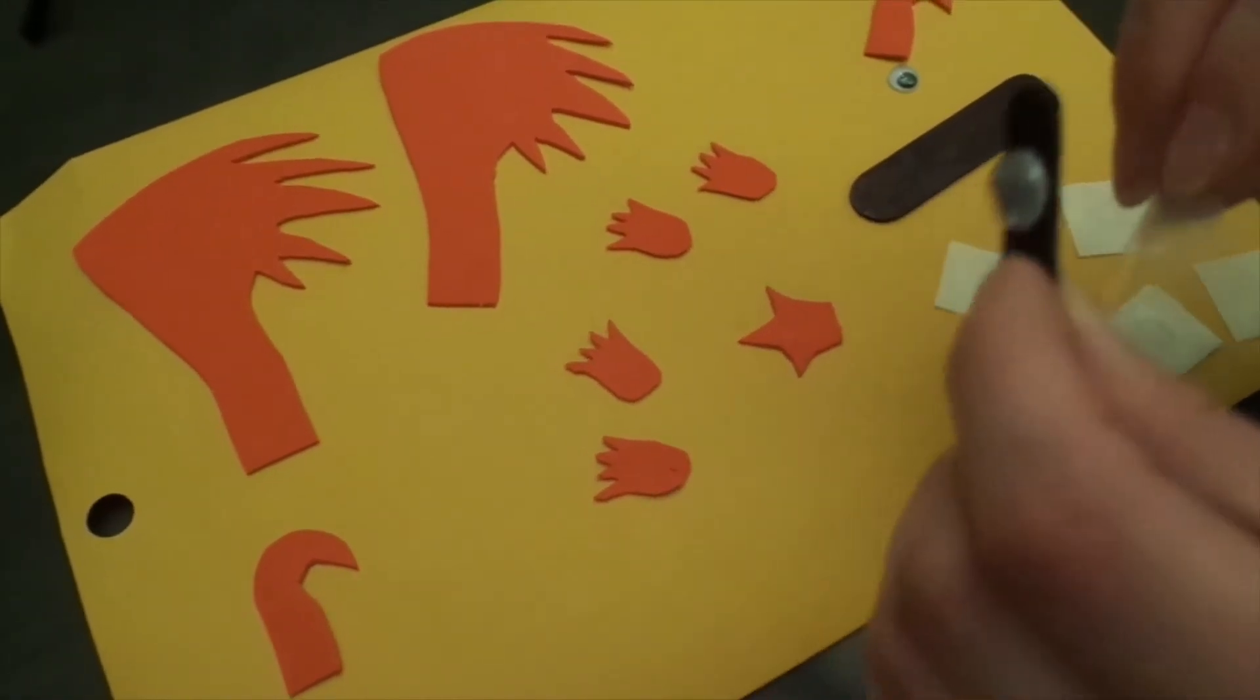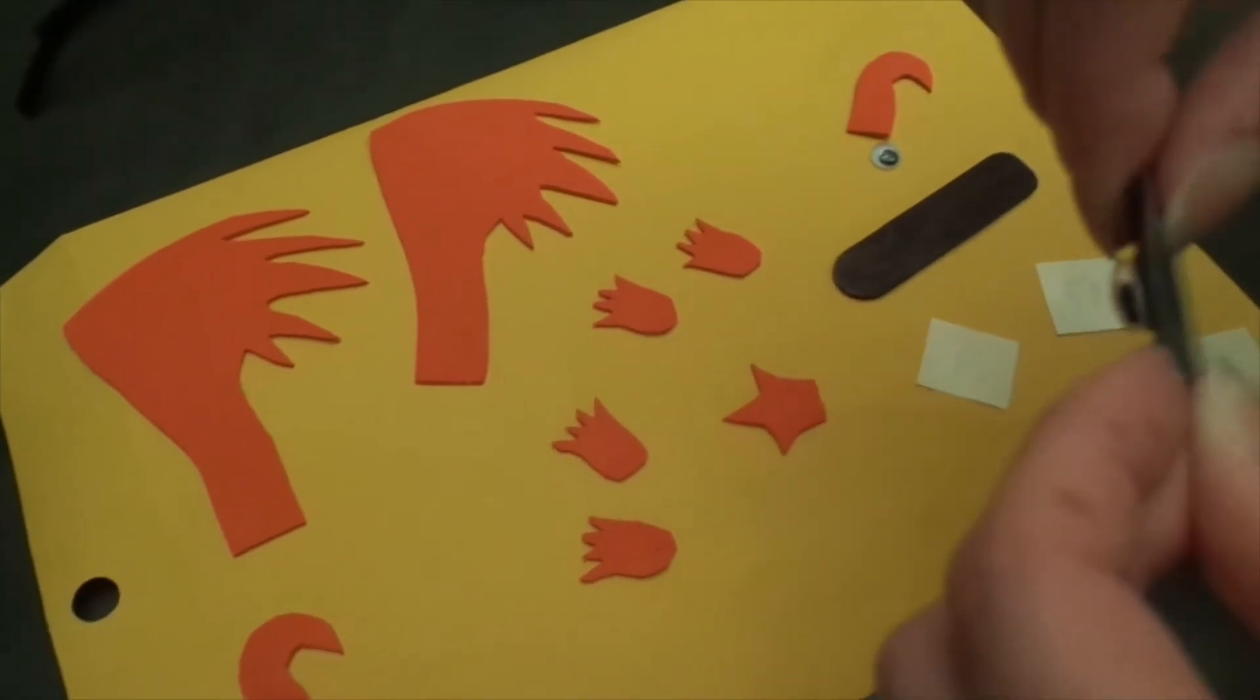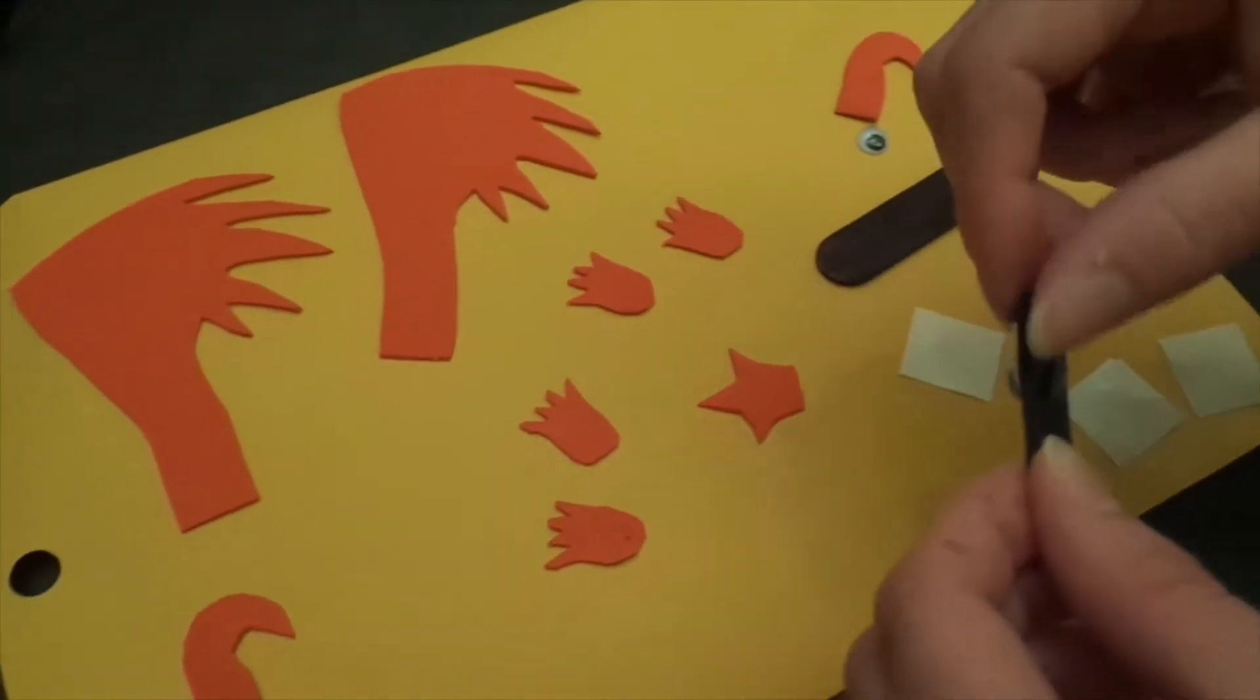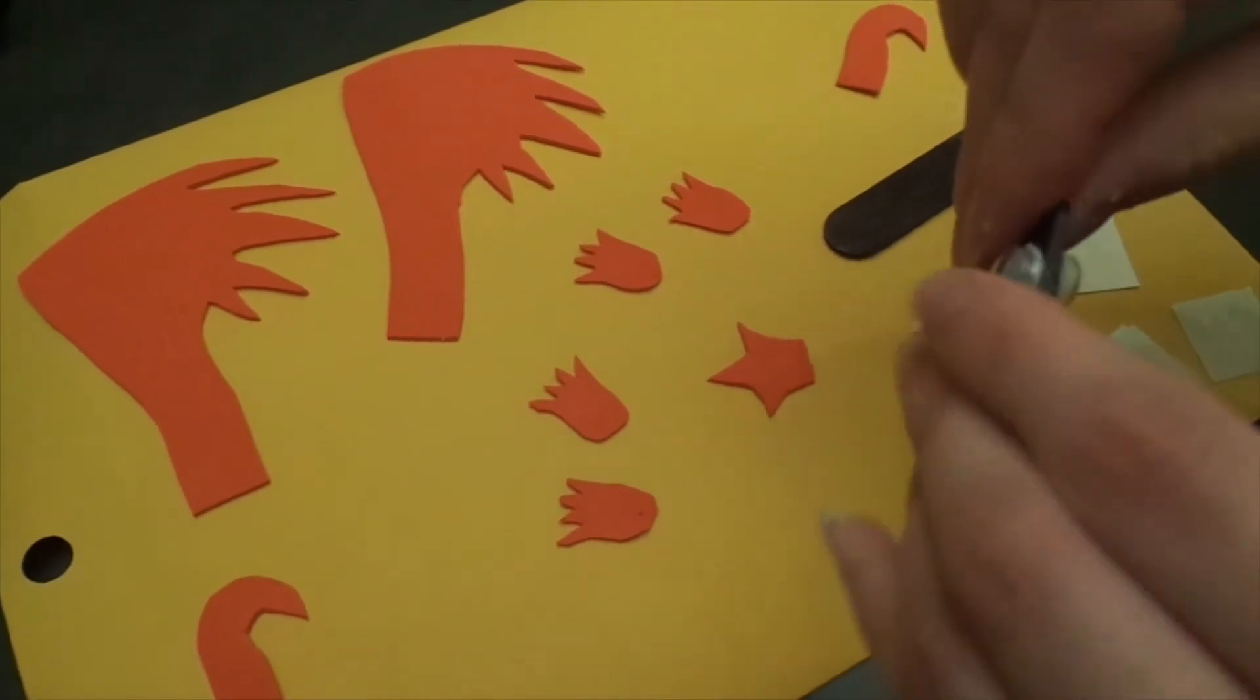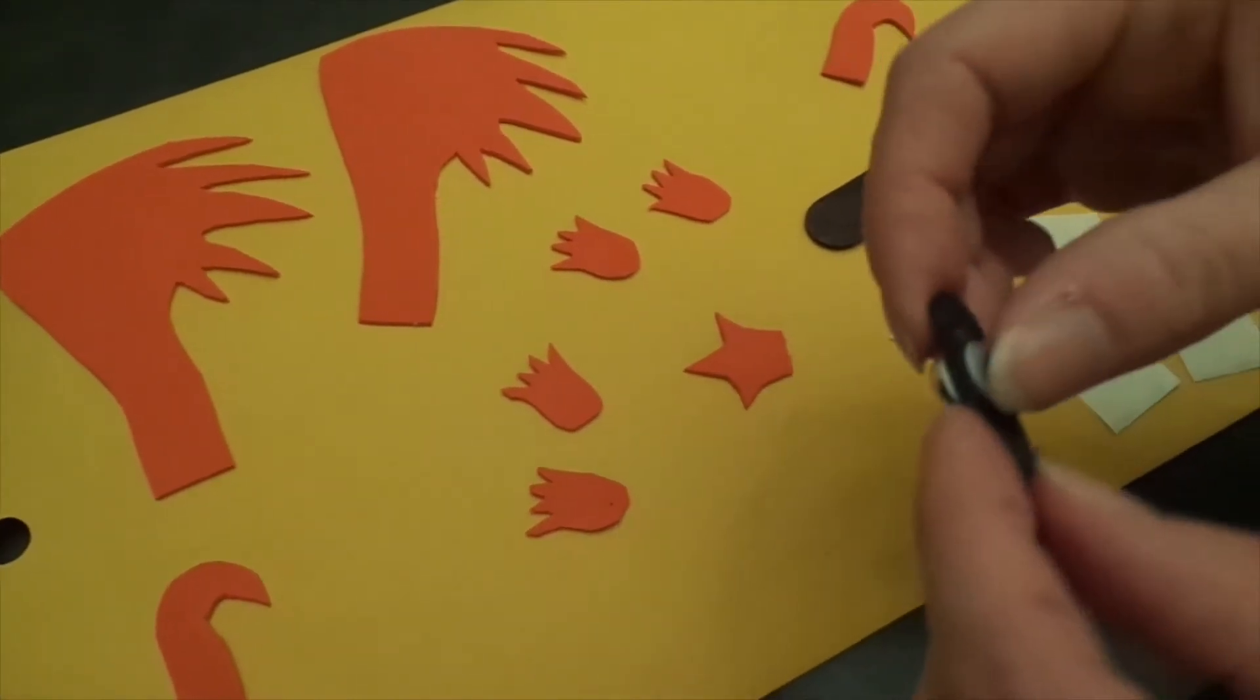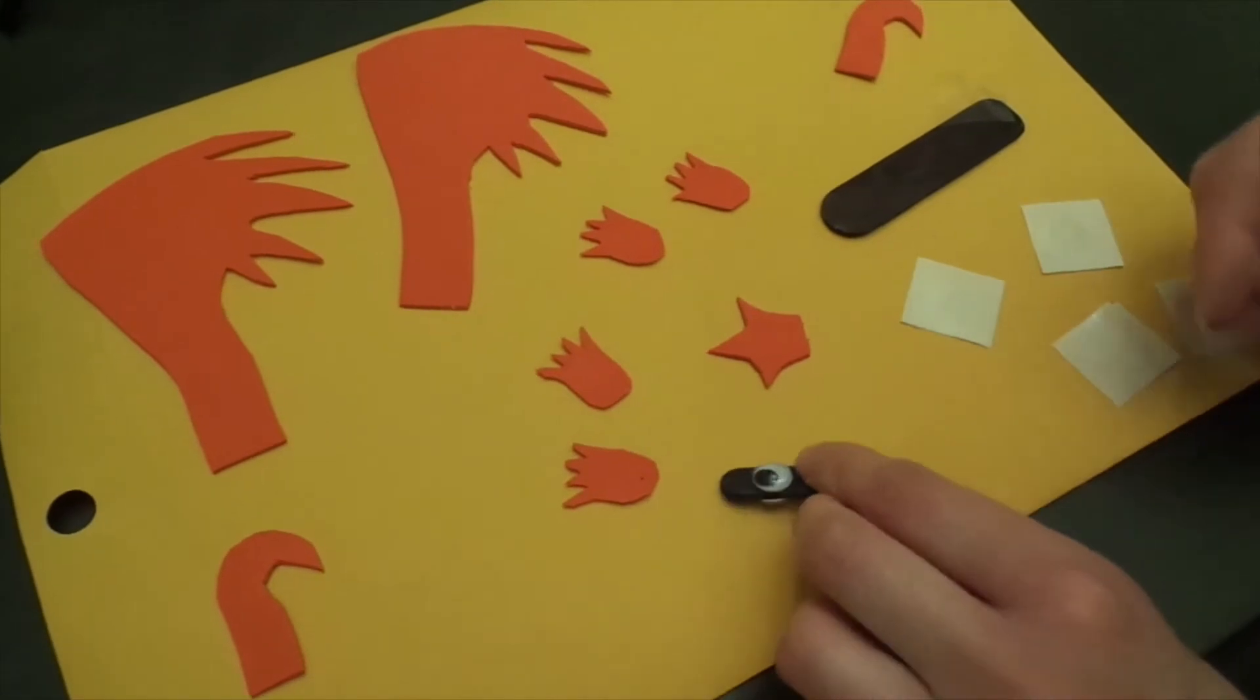The glue dots are nice because you also don't need much drying time at all. So we can already move on to placing the next eye. You're going to want to place it directly opposite of your other one.